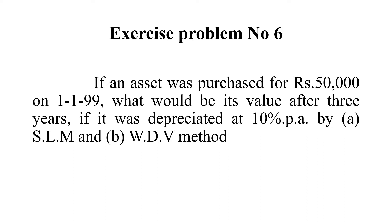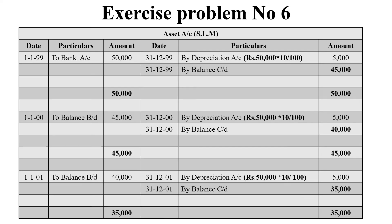The cost of asset is 50,000 and depreciation is 10%. The date of purchase is 1st January 1999 — a 50,000 worth asset. The depreciation is 50,000 into 10 by 100, which is 5,000. By depreciation, 5,000 is mentioned. The balancing figure is 45,000, which is transferred to the next year, that is 1st January 2000.